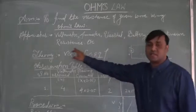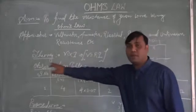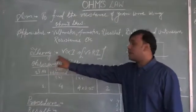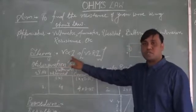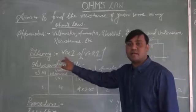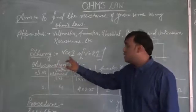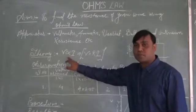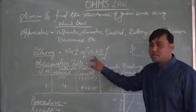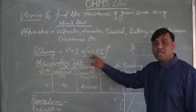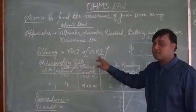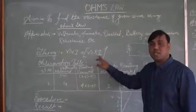Now we'll move to the theory of this experiment. As you all know, V is directly proportional to I — that is, potential difference is directly proportional to current. When we remove the proportionality sign, we use R as a constant, so it becomes V equals R into I, that is resistance multiplied by current.